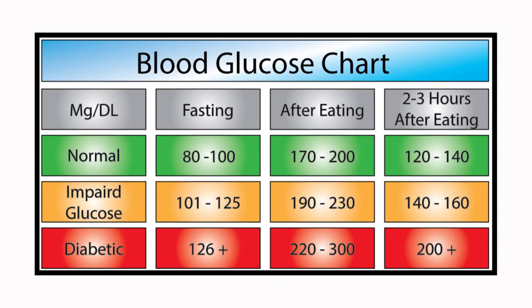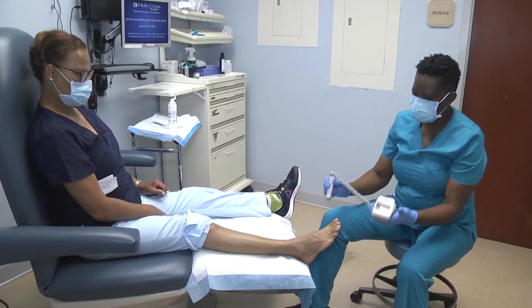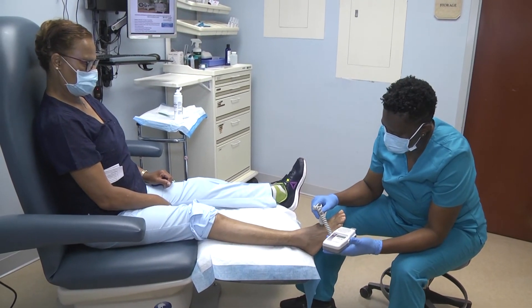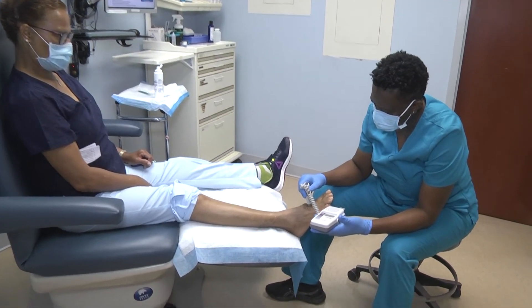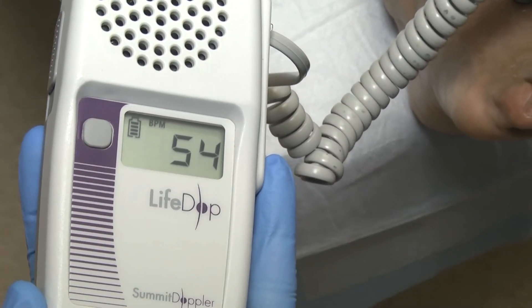There are several measures we can take to address or prevent that. First of all, you have to go to the doctor, check your blood glucose levels and your hemoglobin A1C. Make sure your numbers are correct. Make sure your circulation is correct — every patient with diabetes has to have an arterial circulation study to make sure the circulation is okay.